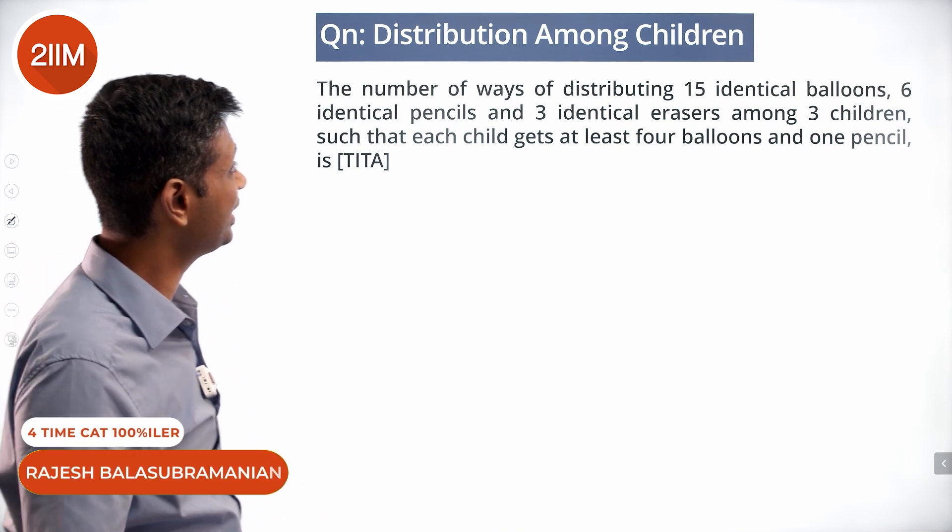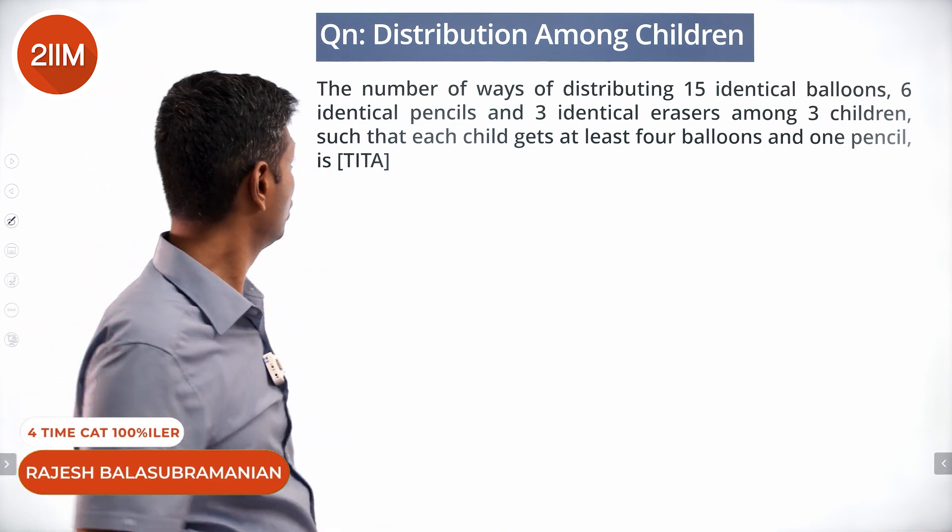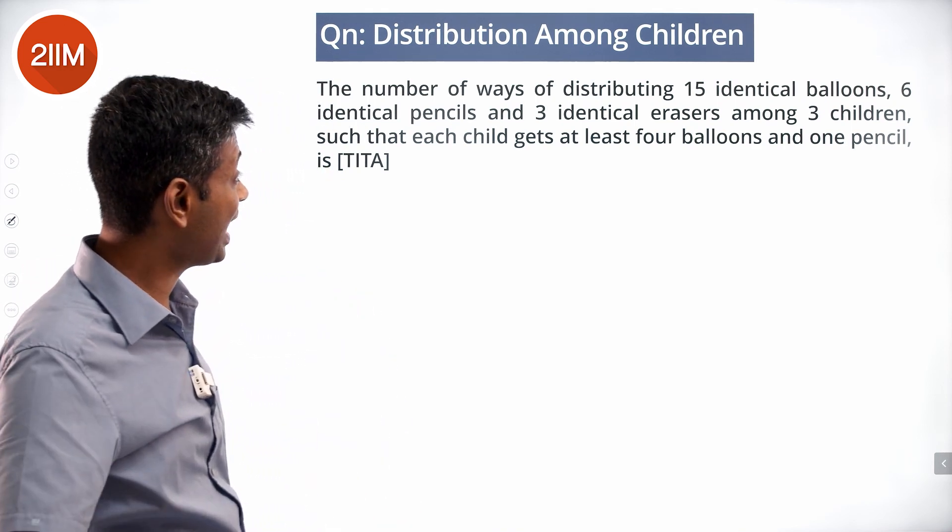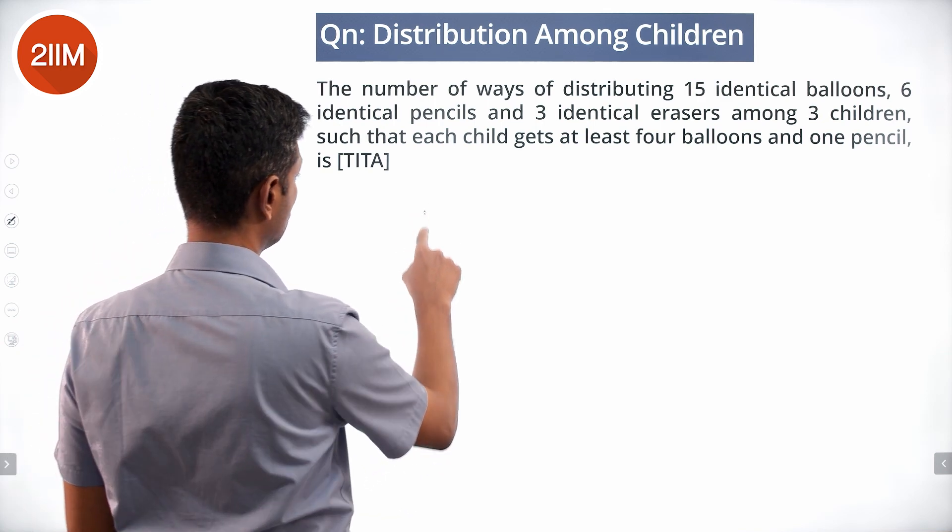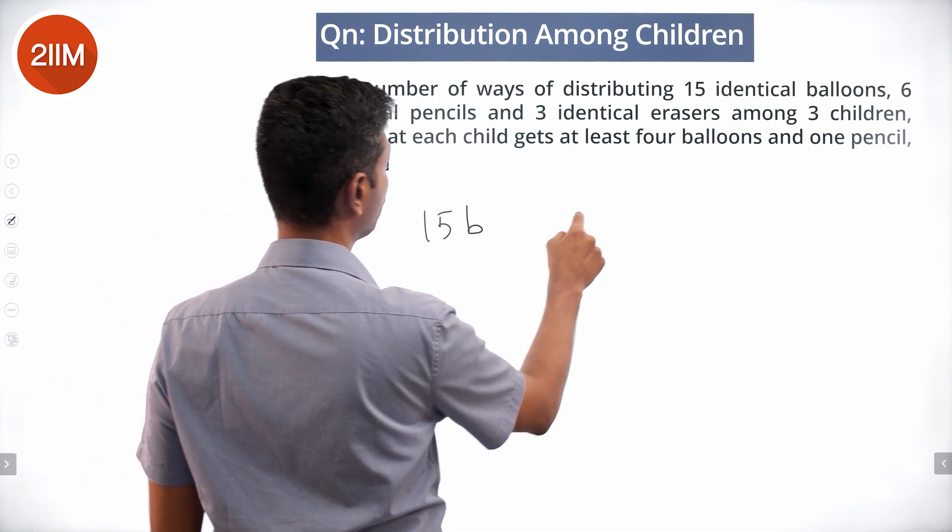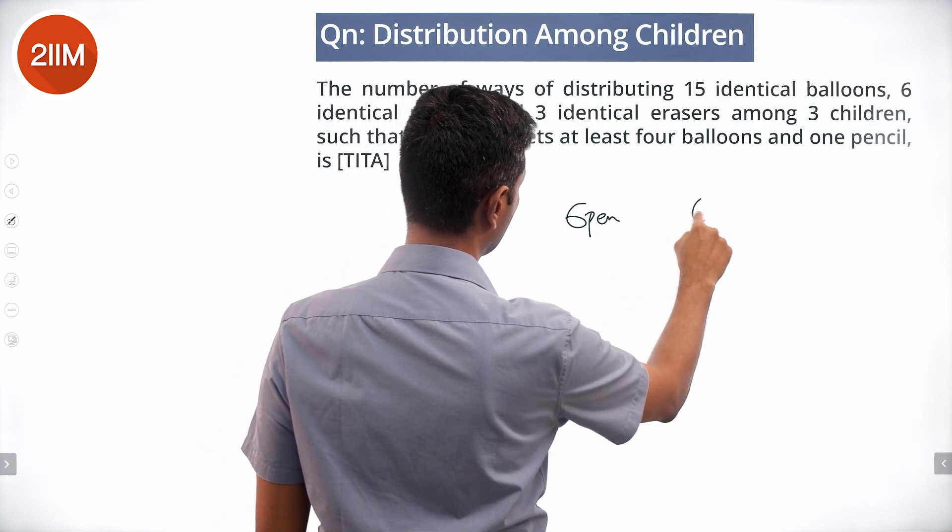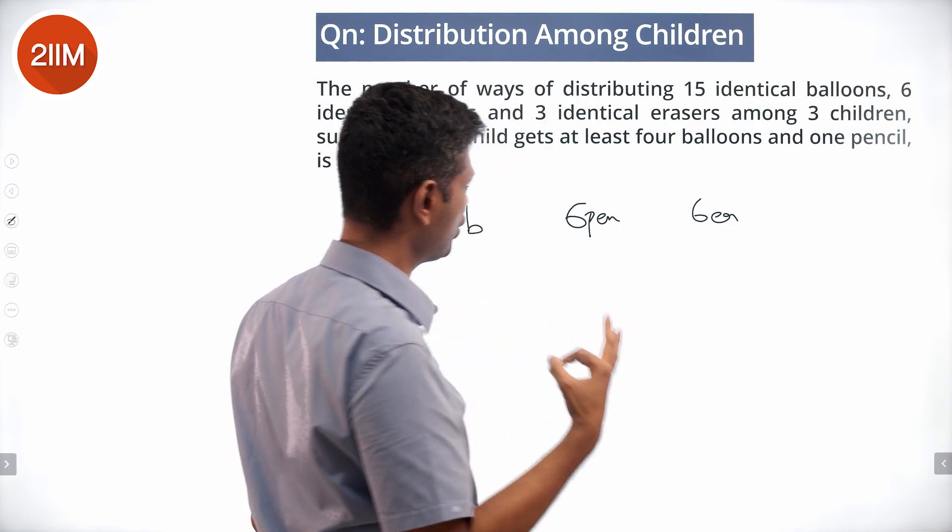The number of ways of distributing 15 identical balloons, 6 identical pencils, and 3 identical erasers among 3 children.